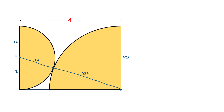Now focus on this triangle ABC. This triangle ABC is a right-angled triangle. The length of side AB is a. The hypotenuse AC is a plus 2a, which is 3a. So AC equals 3a. And BC is the same as the length of the rectangle, which is 4 units. So BC equals 4.